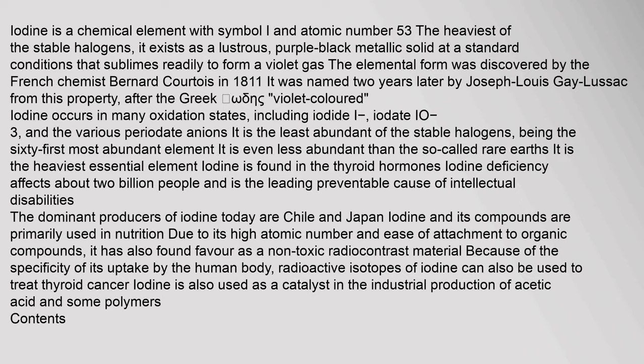Iodine is a chemical element with symbol I and atomic number 53. The heaviest of the stable halogens, it exists as a lustrous, purple-black metallic solid at standard conditions that sublimes readily to form a violet gas. The elemental form was discovered by the French chemist Bernard Courtois in 1811, and was named two years later by Joseph Louis Gay-Lussac.